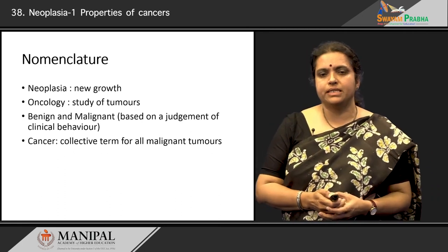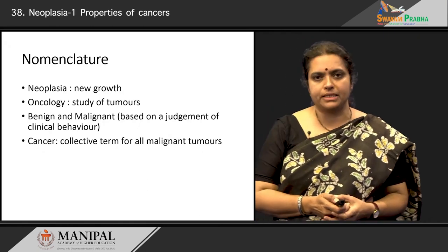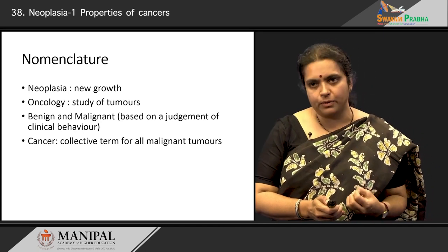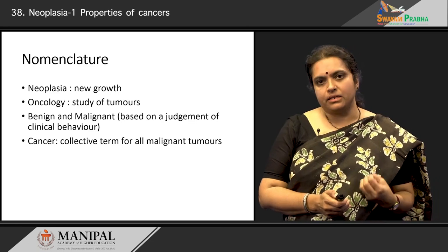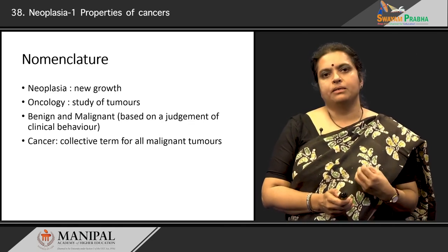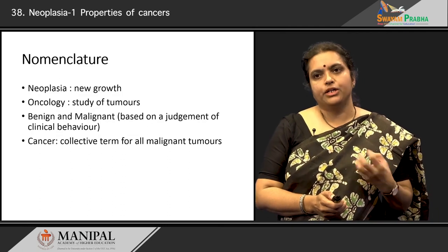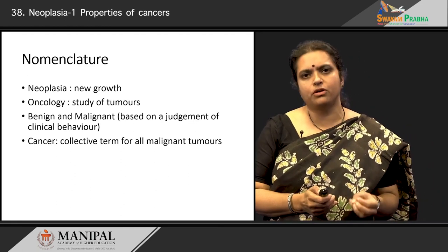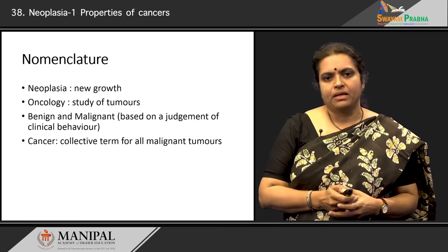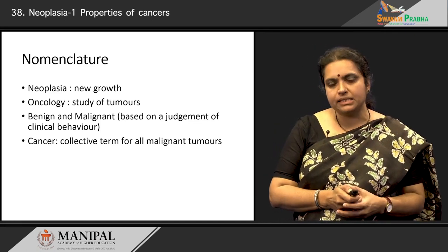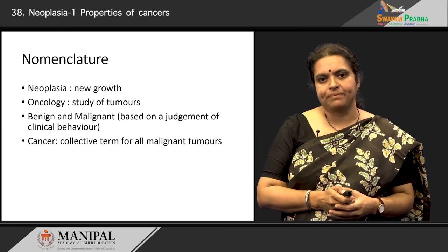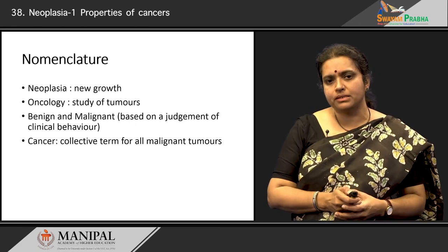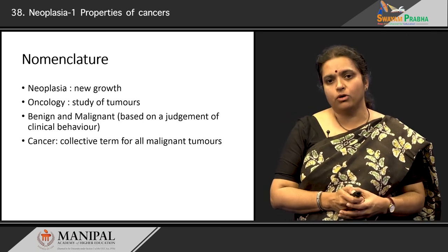Before we move on to the different aspects of cancer cells, there is certain nomenclature we need to understand, because we need to use words understood by pathologists, clinicians, patients, and everyone in a uniform way. The first term is neoplasia, the word itself means new growth. The second word is oncology, which is the study of tumors — the logos or study of onco or tumors.